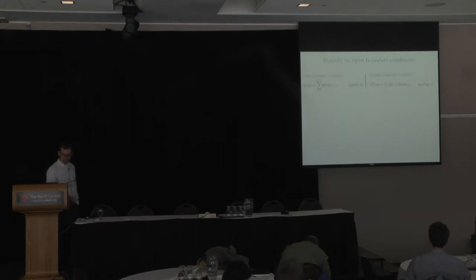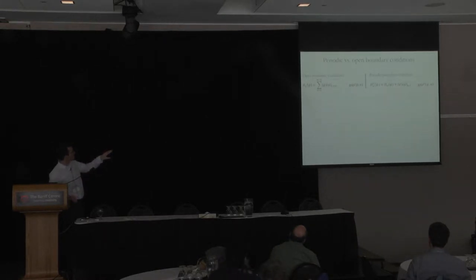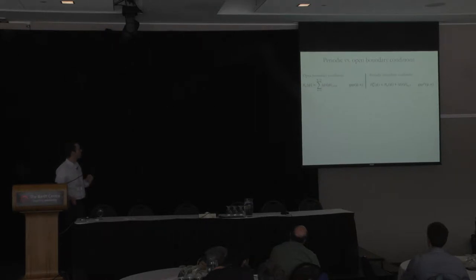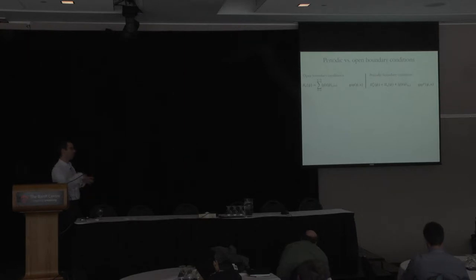The proof is going to use a relationship between the Hamiltonian that we started with — which I'm going to call the open boundary chain, or the Hamiltonian with open boundary conditions — and another Hamiltonian, which has a superscript P for periodic boundary condition. This periodic Hamiltonian: you just take the open boundary chain and add an extra term which acts between the nth and the first qubit. So this is a truly translation invariant system on a ring.